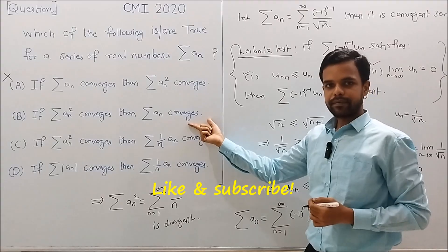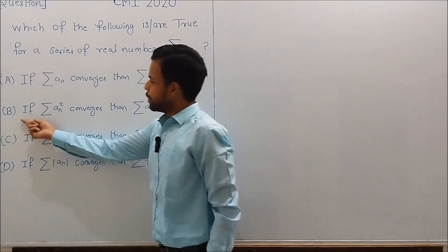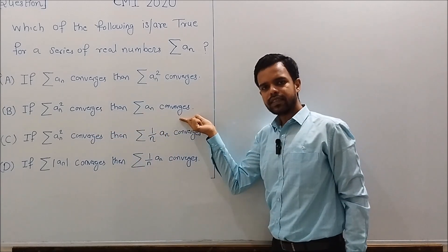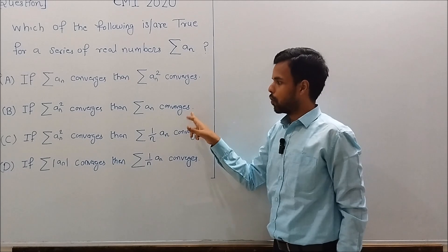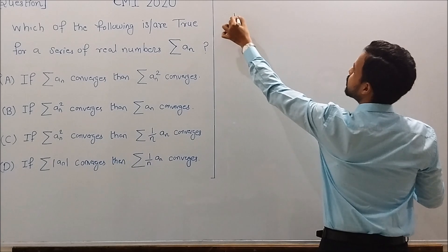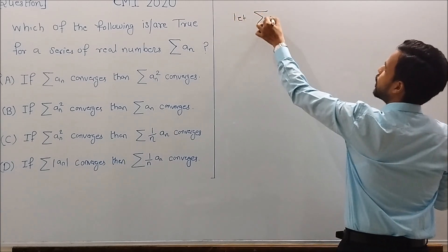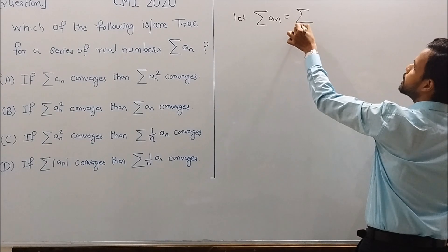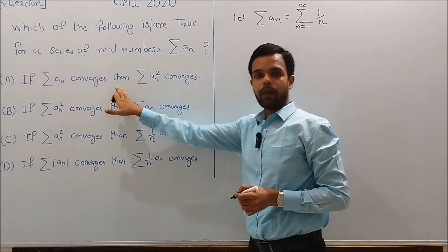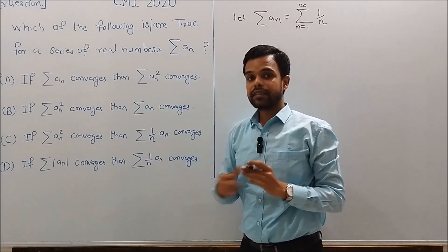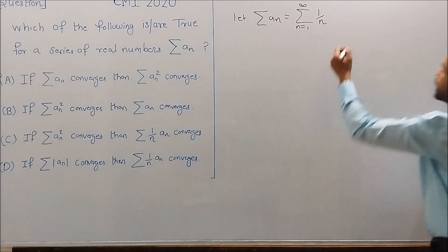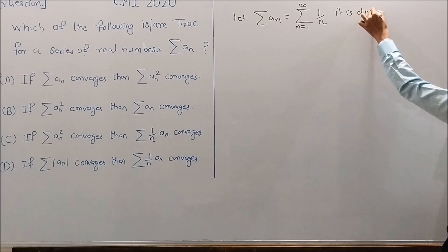Now let us move to Statement B: if series An squared converges, then series An converges. This is also a false statement. To see it, let series An be the harmonic series. As we saw in part A, the harmonic series is divergent — it diverges to plus infinity.